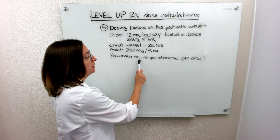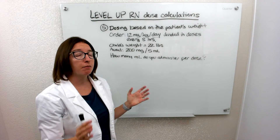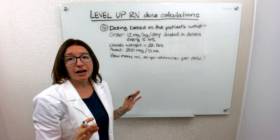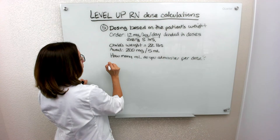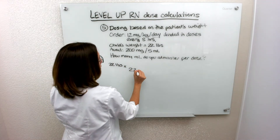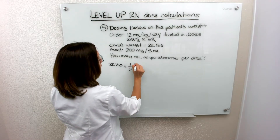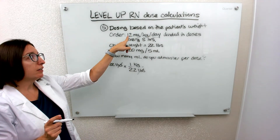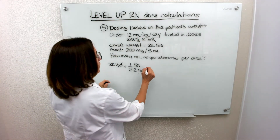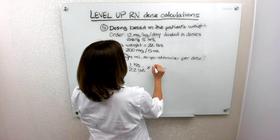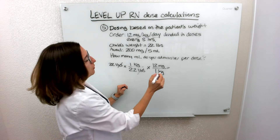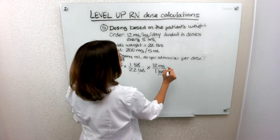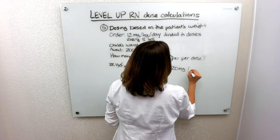The question is how many milliliters do we administer per dose — not for the whole day, but per dose. We know our child weighs 22 pounds and our order is in kilograms, so we're going to convert: 22 pounds times 1 kilogram per 2.2 pounds gives us the child's weight in kilograms. Then we apply 12 milligrams per kilogram per day — kilograms cross off — and we end up with 120 milligrams for the day.